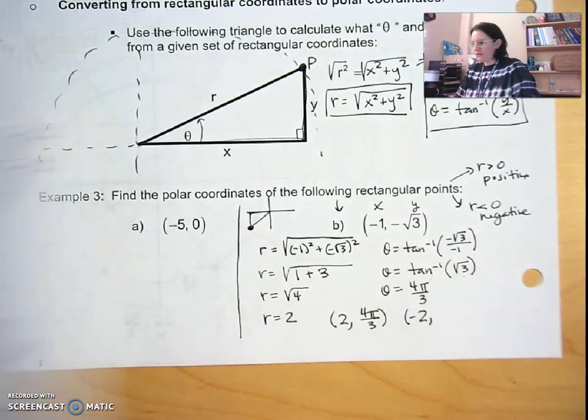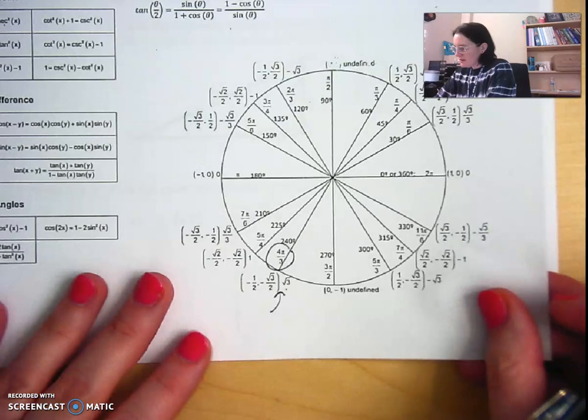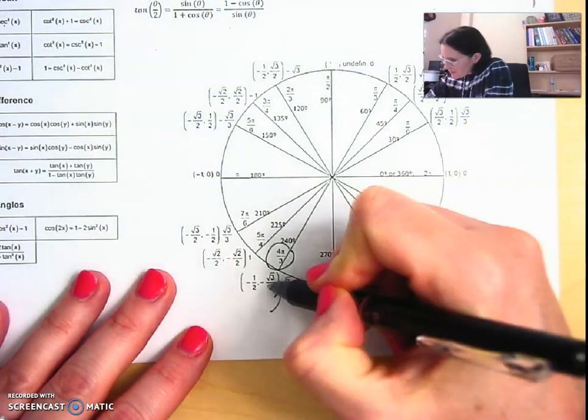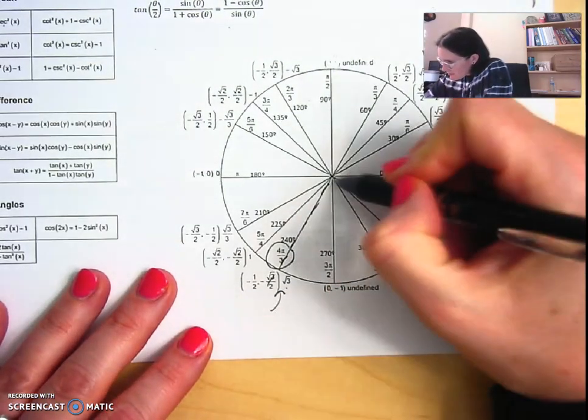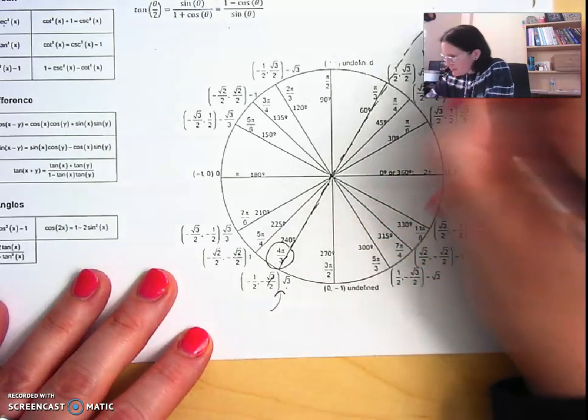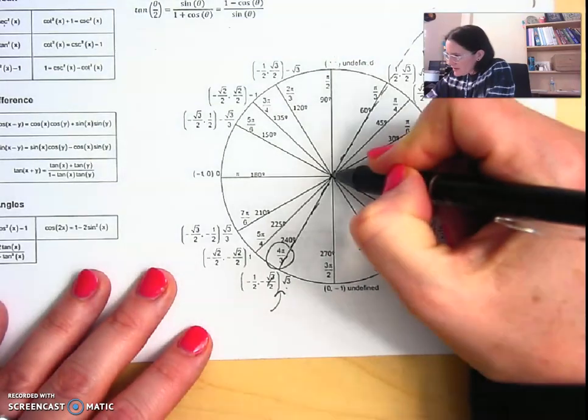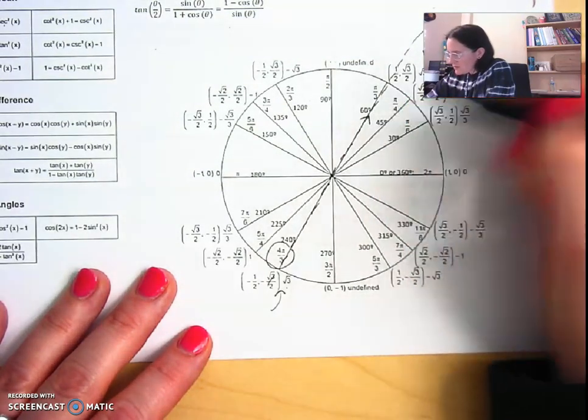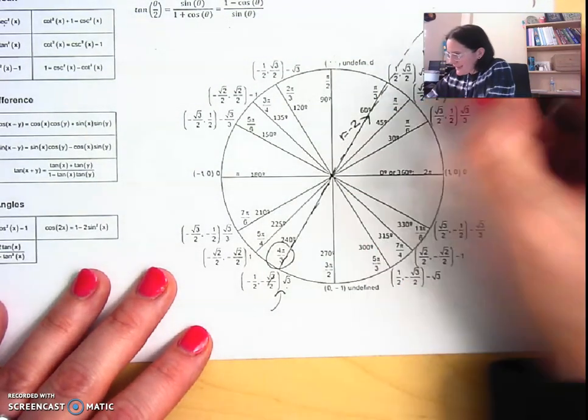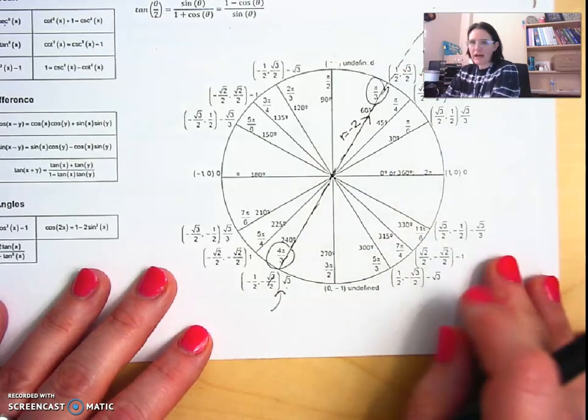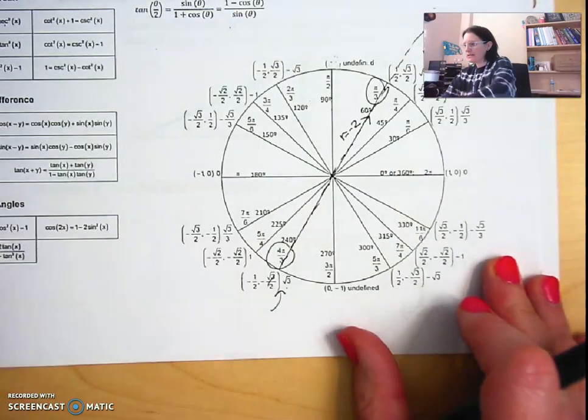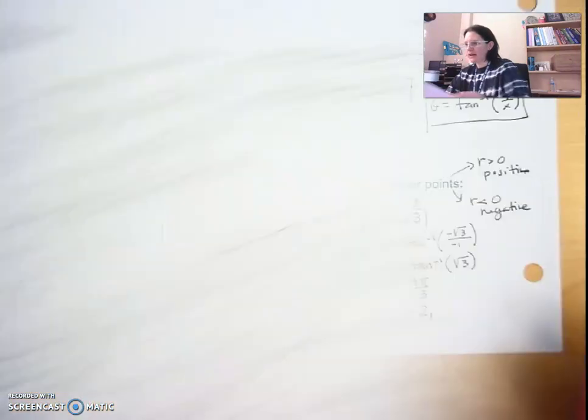So this is what we talked about earlier. Here's the entire line at that angle. This direction is when r is positive two. This direction is when r is negative two, and that angle is pi over three. So when r is negative two, my theta is pi over three.